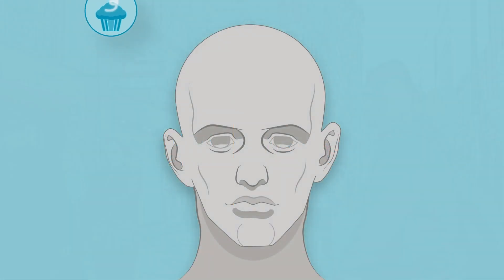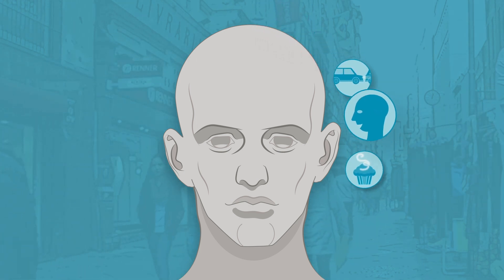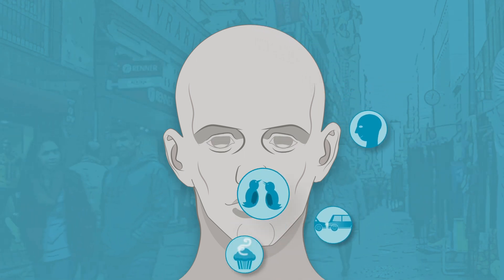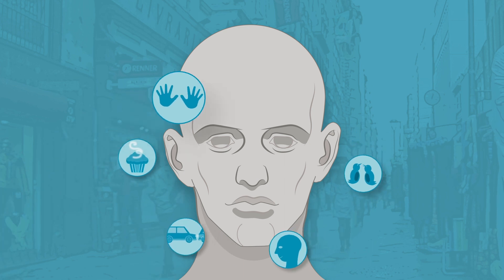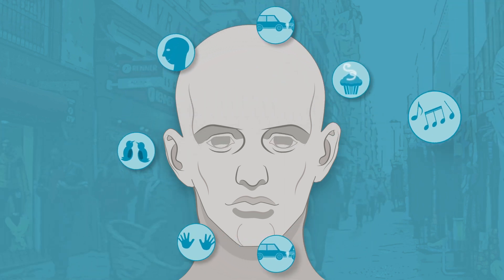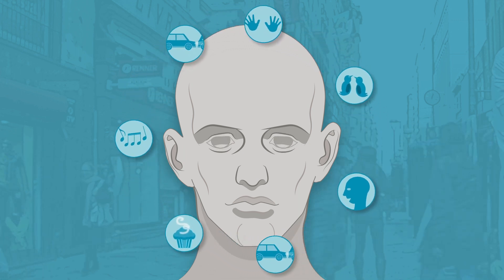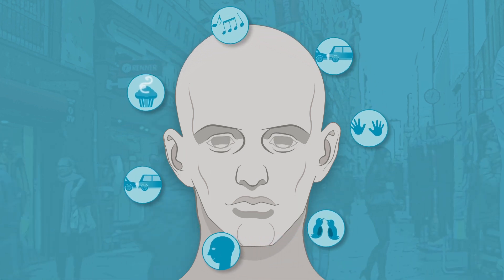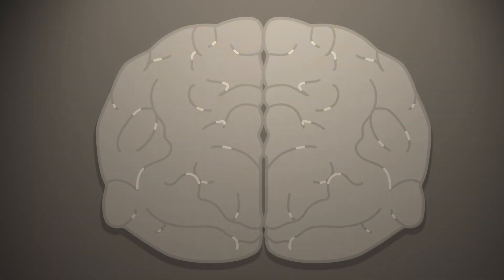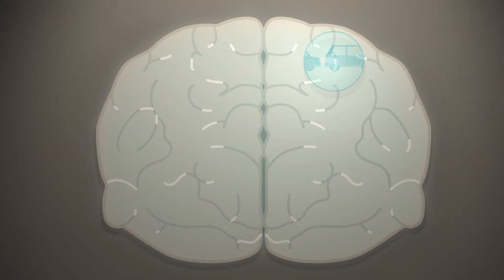The brain constantly receives vast amounts of sensory input. For your brain to detect critical information and react appropriately, non-threatening or unimportant information is suppressed. An important sensory suppression mechanism is called habituation. Habituation is another way to say getting used to a sensory input.